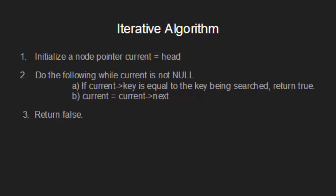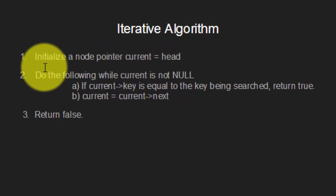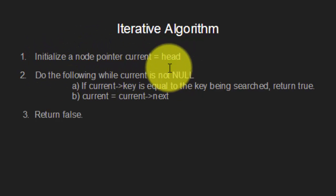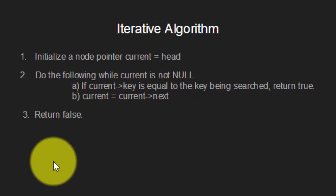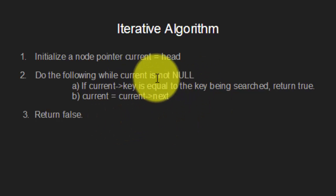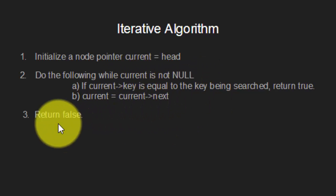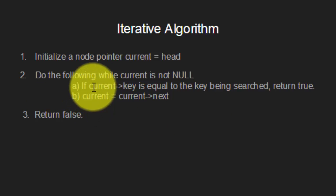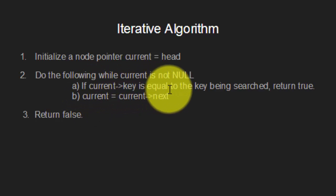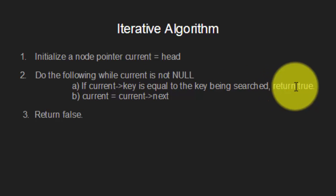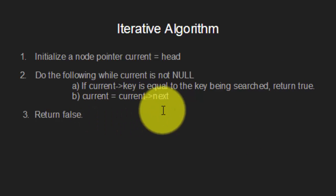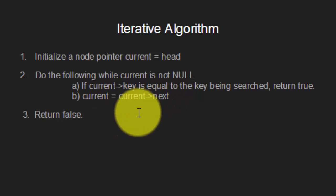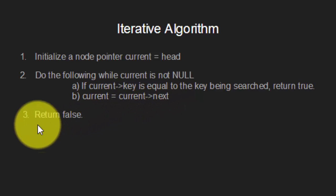Let us now see how the iterative algorithm works. We first initialize a node pointer current to point to the head node of the linked list. Then we do the following operations until current is not null: if the key value of the current node is equal to the key being searched, the function will return true. Otherwise, we change the node pointer current to point to the next node. Finally, it will return false.